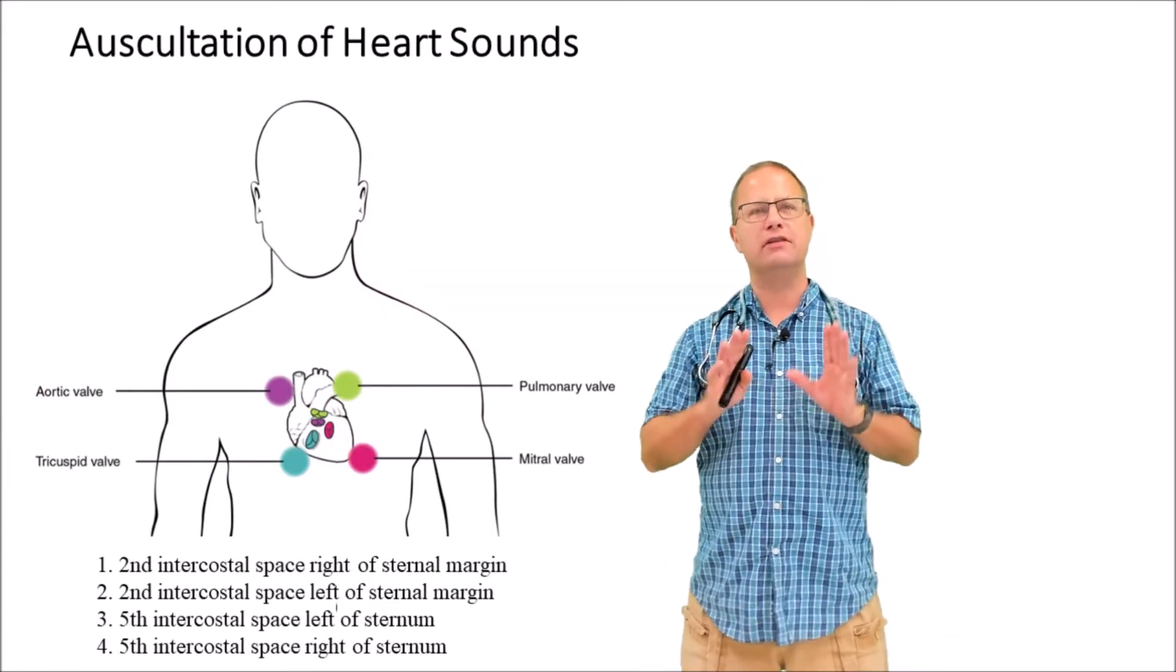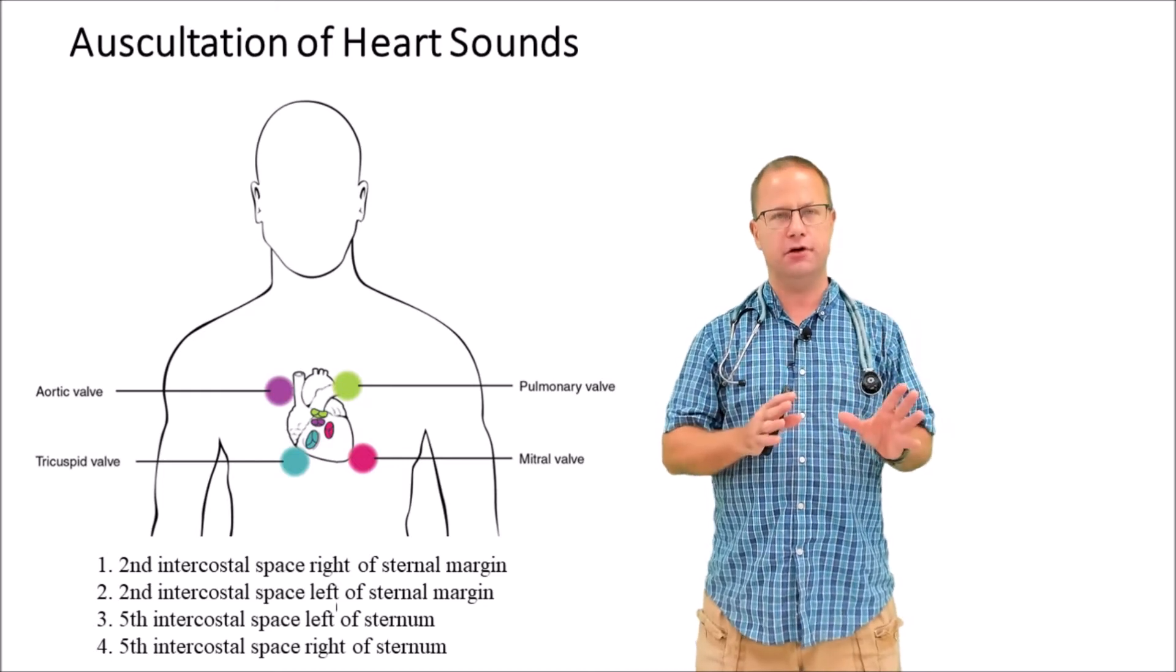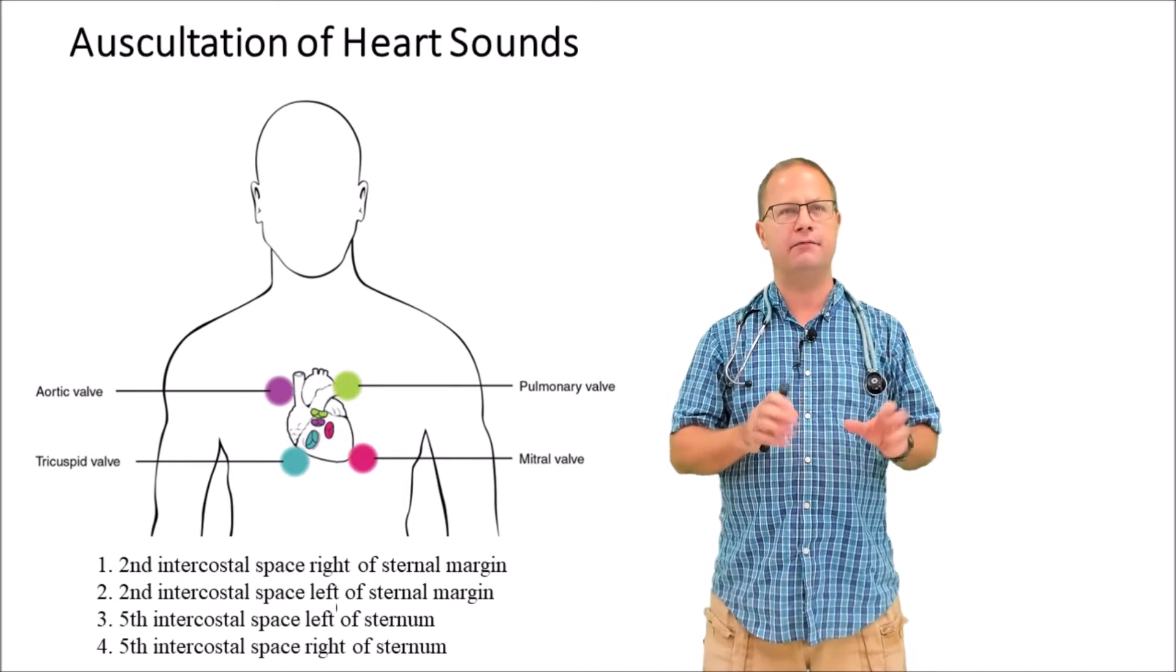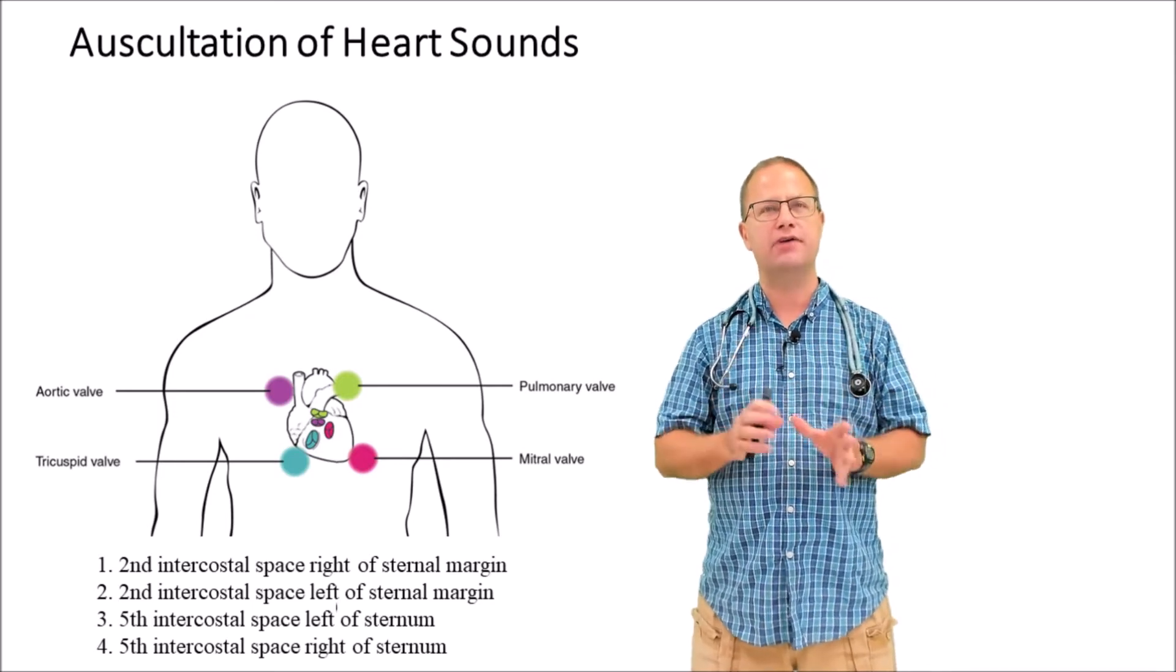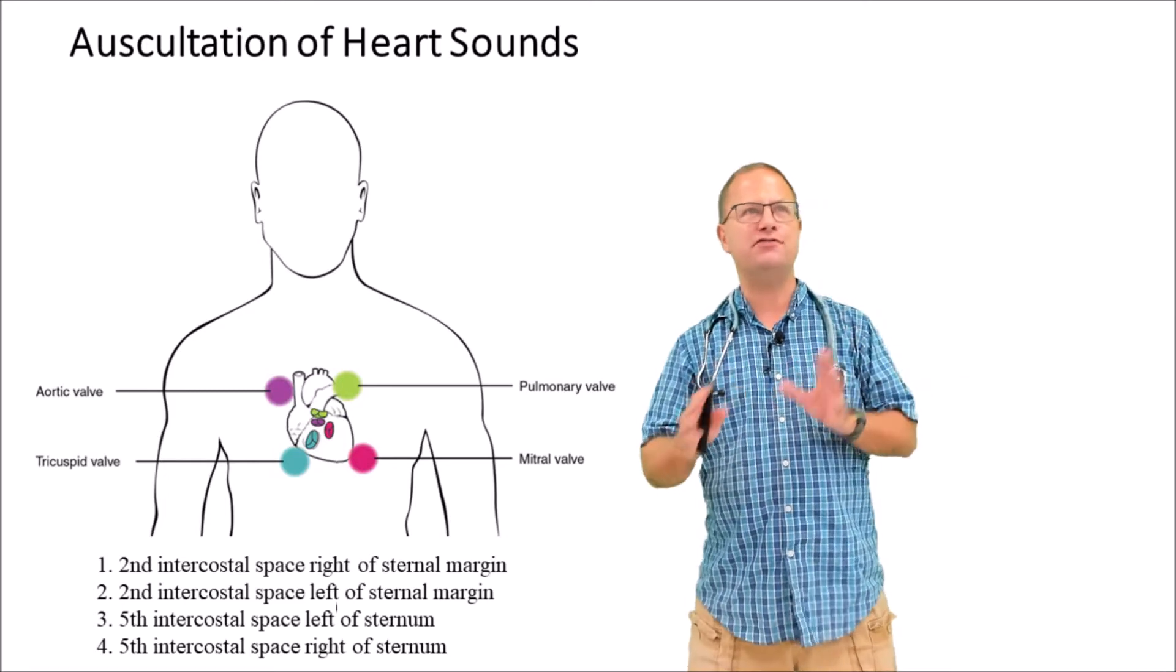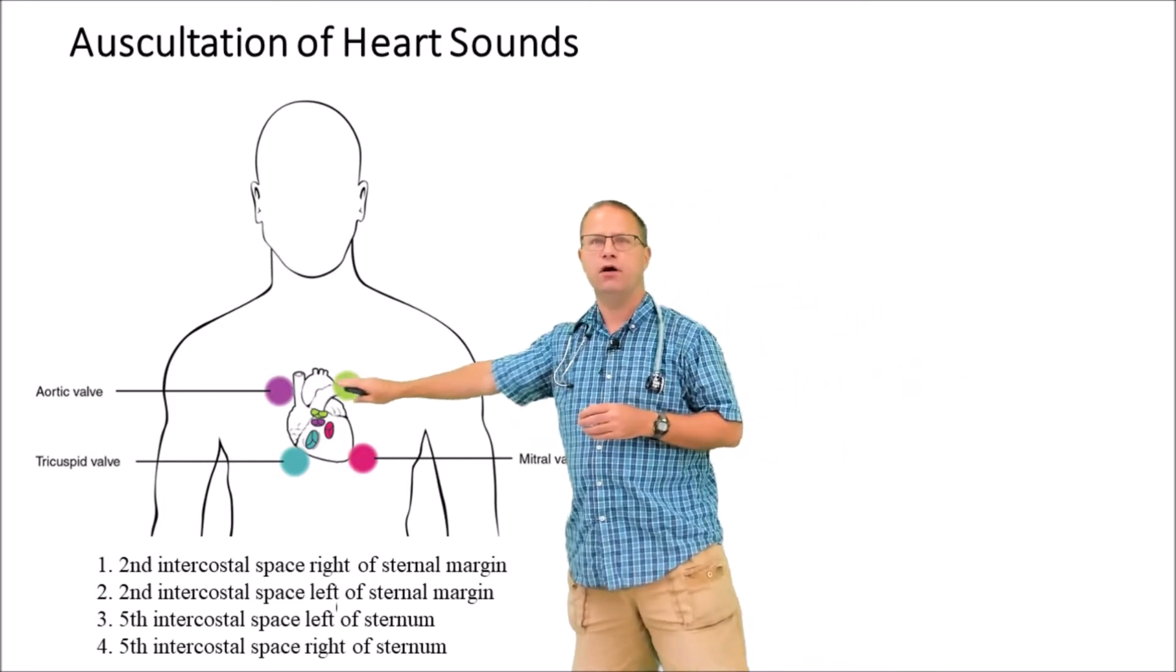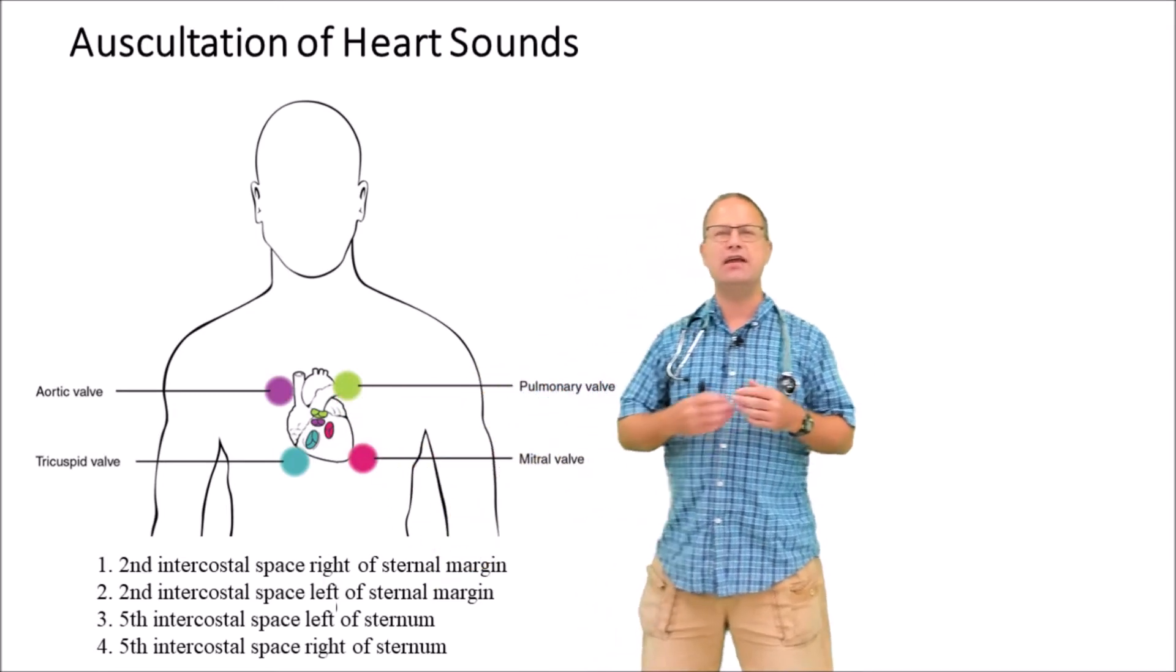In auscultating or listening to heart sounds, what we're listening for is the sound of the valves closing. That would be the aortic and pulmonary semilunar valves as well as the atrioventricular valves, the tricuspid and mitral valve. Depending on which valve we want to listen to, we can choose different locations on the chest wall.